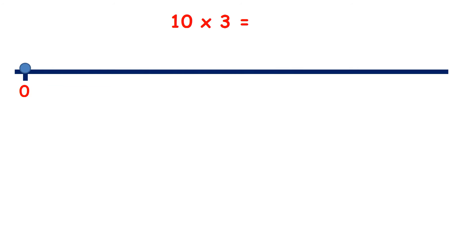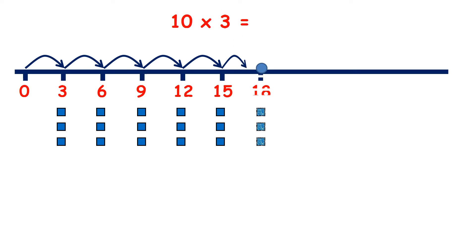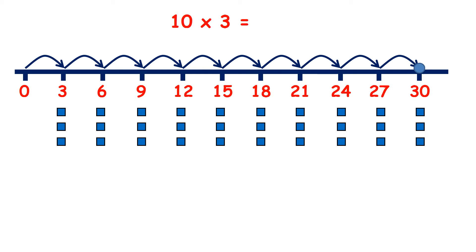Now for 10 times 3, we can count on in 3s ten times. So 3, 6, 9, 12, 15, 18, 21, 24, 27, 30. But notice that 10 times 3 gives us the same answer, 30.